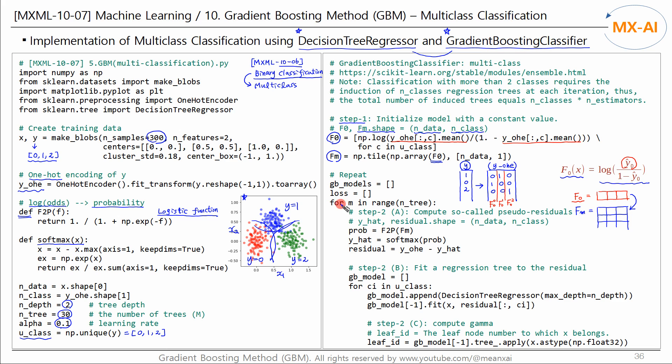Now repeat the process below 30 times. Step A in step 2 calculates the residuals. Use the logistic function to convert logOddsFm to probabilities, and then convert this to softmax probability. This is the predicted probability Y hat. We then use the difference between the one hot encoded Y and the Y hat to calculate the residuals. Then the shape of the residual will also look like this.